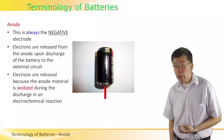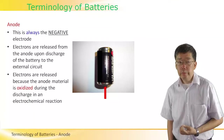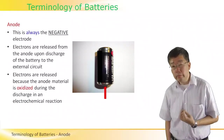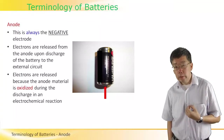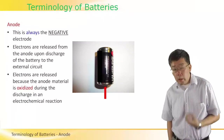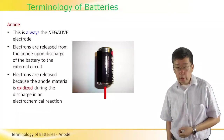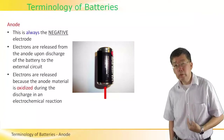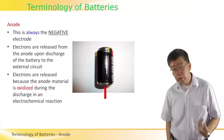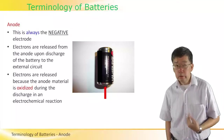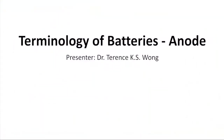Electrons are released from the anode because the material of the anode is being oxidized during the discharge in the electrochemical reactions within the battery. Oxidation simply means the material is losing electrons, is transferring electrons to the cathode, which we will talk about next.